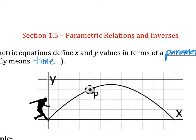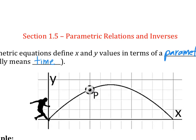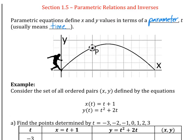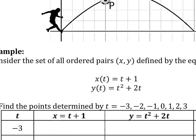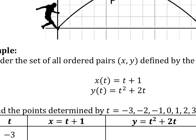Both of them could be with respect to time. We have an equation where x is in terms of the variable t, and y is in terms of the variable t, and both of them are moving according to time.